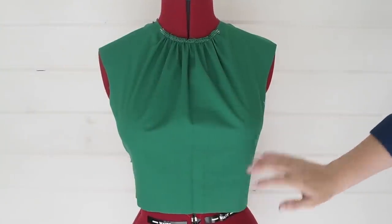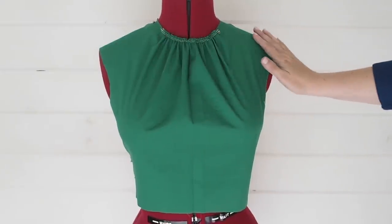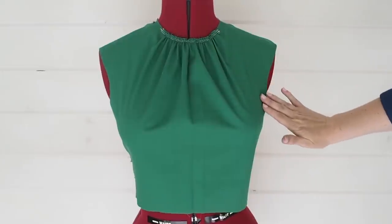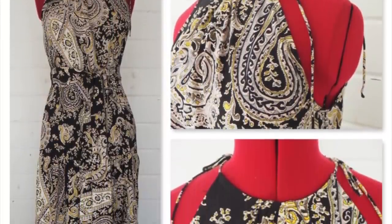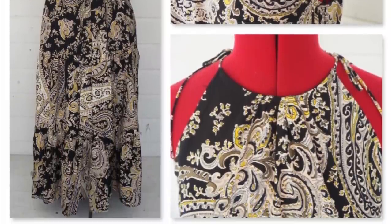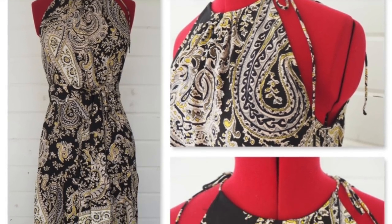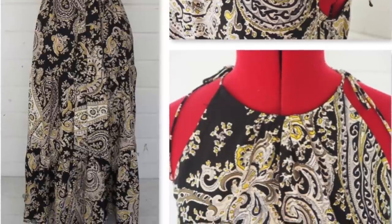So that completes technique number three. So I've transformed both the waist dart and that side seam dart into neck gathers. So I have two examples to show for this technique. And in this first one, I used the raglan block base. I reduced gape at the armhole and transformed all of the darts into the neck.